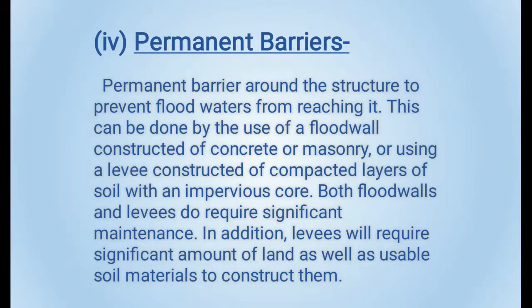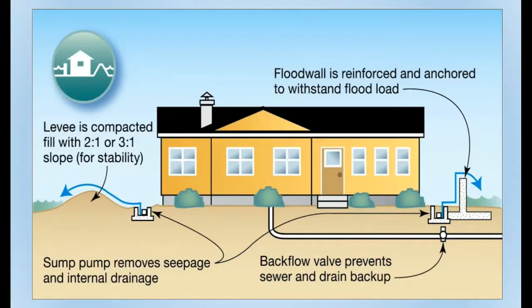Now coming to the fourth and last technique, that is permanent barriers. In this technique, permanent barriers are constructed around the structure. These can be concrete or masonry, or they can be embankments or levees constructed of compacted layers of impervious soil. This is the most common technique, but it requires a significant amount of land and usable soil material. In the picture, the flood wall is reinforced and anchored to withstand flood load, and levees are shown on the left side, along with the backflow prevention for sewer and drain backup.